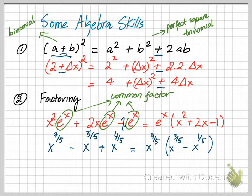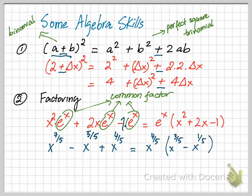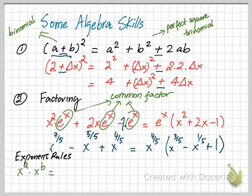So you extract x to the 4 over 5 out. Looking at the first term, what is left over from x to the 7 over 5 is x to the 3 over 5. The second term's leftover from x to the 5 over 5 is x to the 1 over 5. Most people think they are done at this point, but you're wrong — remember you have three terms, so after factoring out the common term you should still have three terms. That means you need to replace x to the 4 over 5 by 1 in the third term.